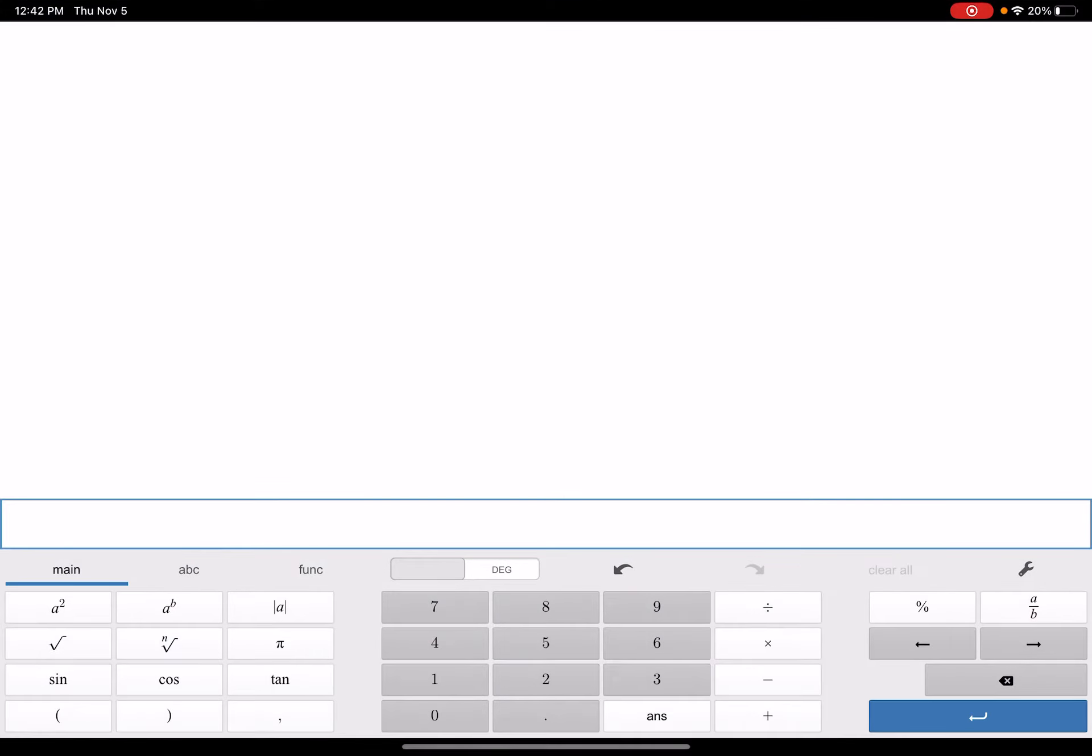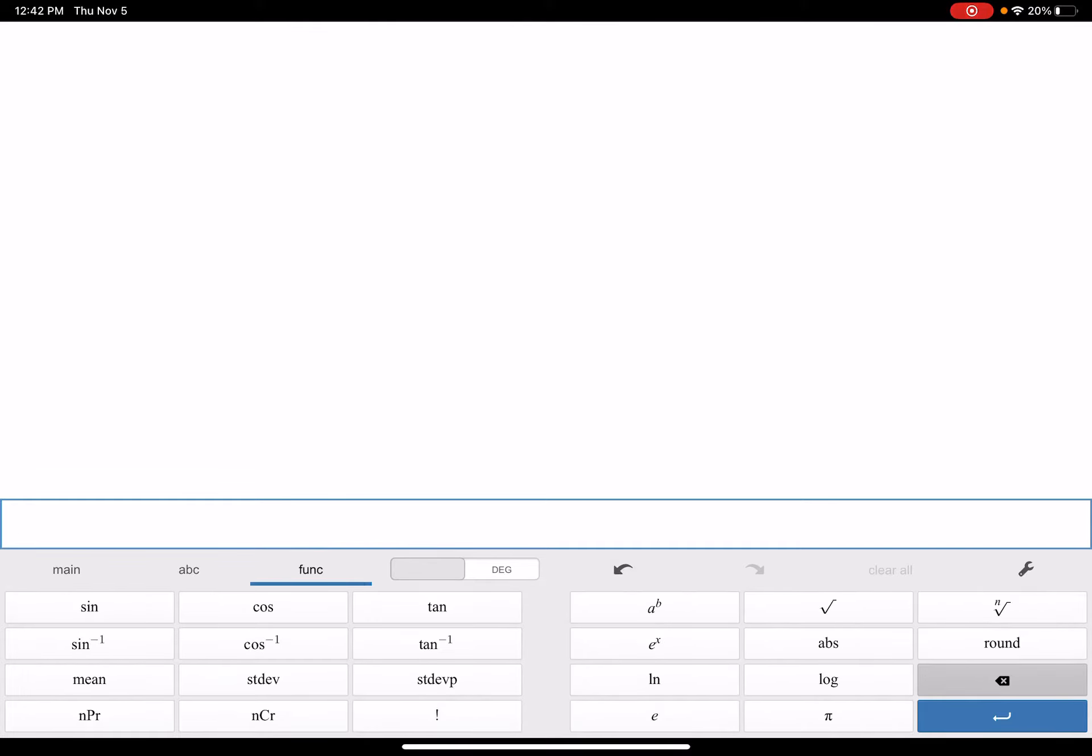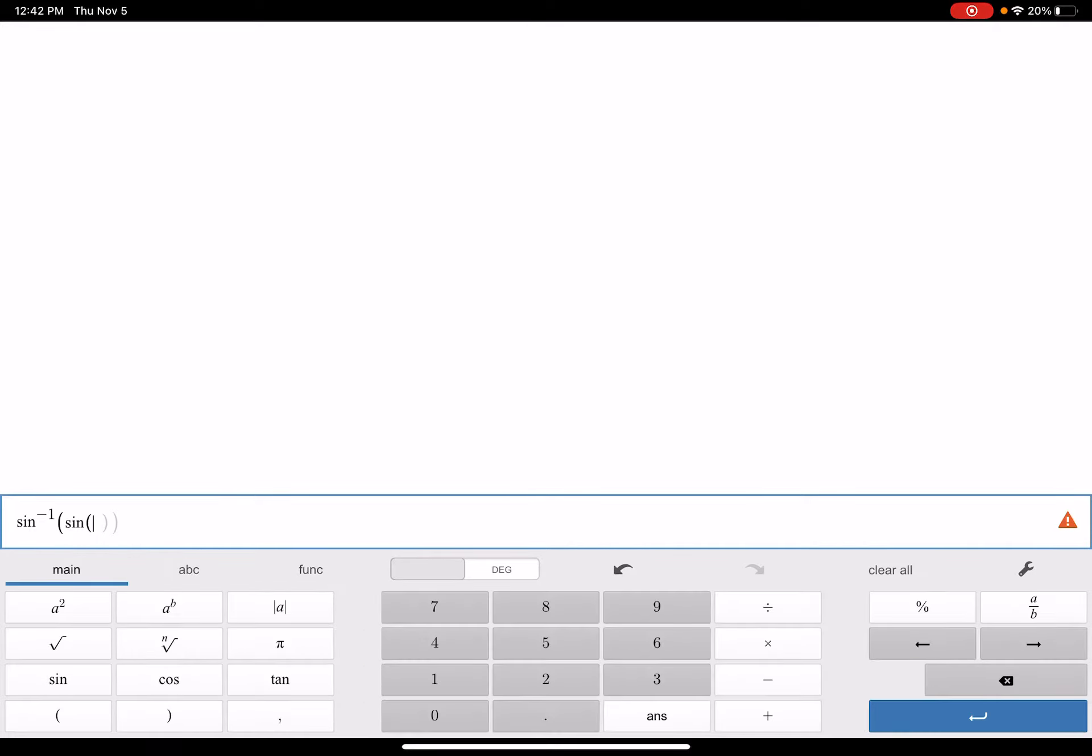Let's pull up this Desmos calculator and do the same exact thing. Let's see, it's under functions here, the inverse sine, and inside there we want to put the sine of, we have it set to degrees, and then put in 30. We got 30 back. All right, let's back that thing up now and then put 120 degrees in there. Oh, look at that, we got 60 degrees back.